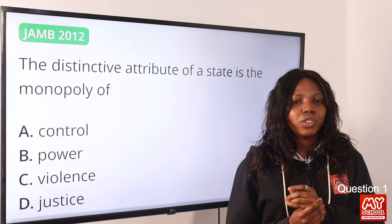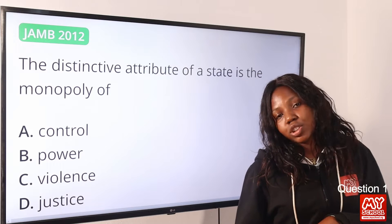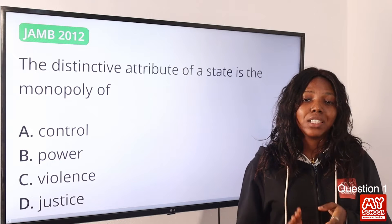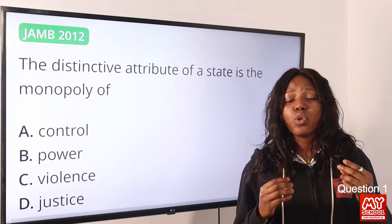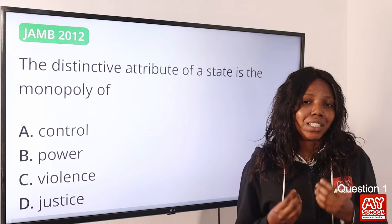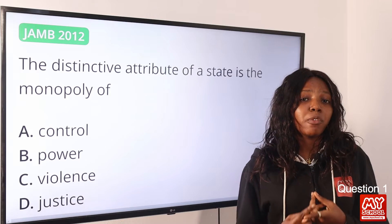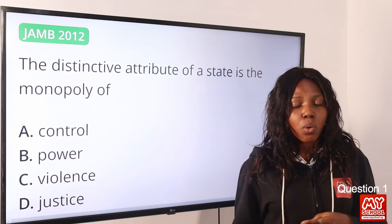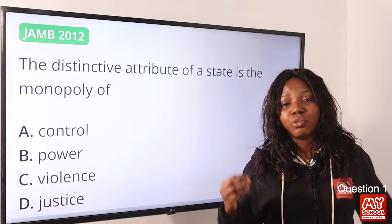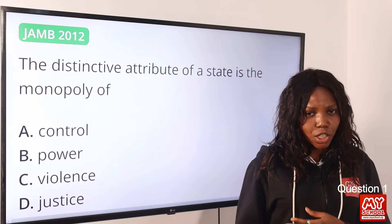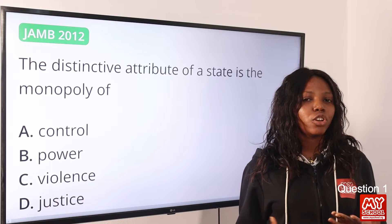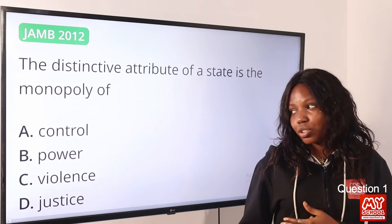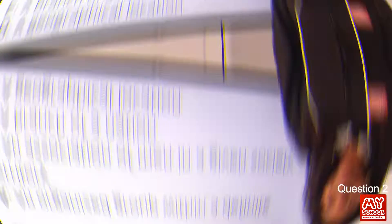The main attributes of a state include population, territory, government, and sovereignty. What makes a state a state is the fact that it has an organized system of government and sovereignty. Sovereignty is the supreme power of the state to make decisions and to enforce law. So the answer to this question remains power, option B.